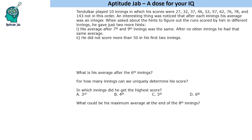He gave a couple more hints to figure out the runs scored in different innings. His average after the 7th and 9th innings was the same, and after no other innings did he have that same average. He did not score more than 50 in his first 2 innings. Using this information we need to determine his scores in various innings.